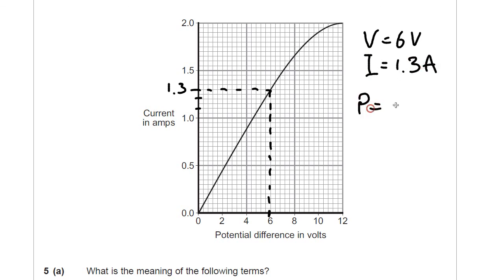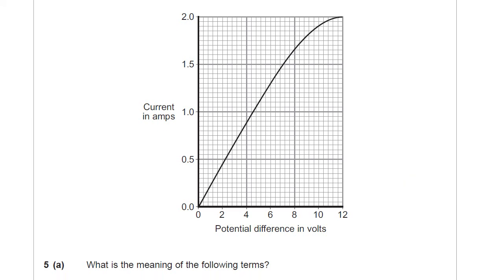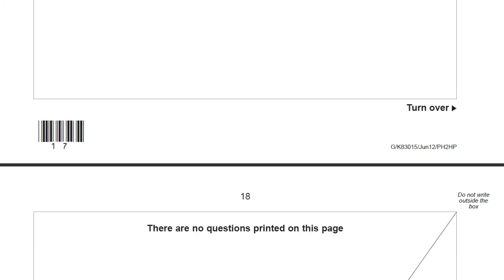Power is current times voltage, which is 1.3 times 6. Go for the calculator, don't make your life any harder than it has to be. 7.8, and the unit was given watts. In this question, you get a mark for correctly getting the current from the graph, and a mark for 7.8. The only tricky part about that, really, was recognising that power is the rate of energy transfer. Not too hard.